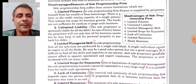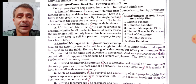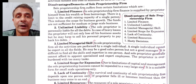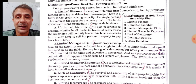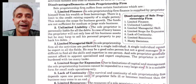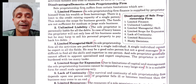Next is limited managerial skill. The person who is the owner of such a business may be very good at one area but may not be good at others. For example, he may be good at sales but may not be good at managing the business overall. So these types of limitations are present in this form of business.